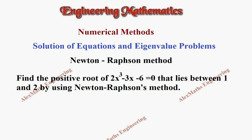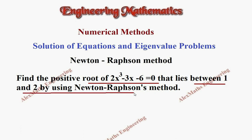Hi students, this is Alex here. In this video we are going to find the positive root of the given equation 2x cubed minus 3x minus 6 equal to 0. They have also given it lies between 1 and 2, by using Newton-Raphson's method.